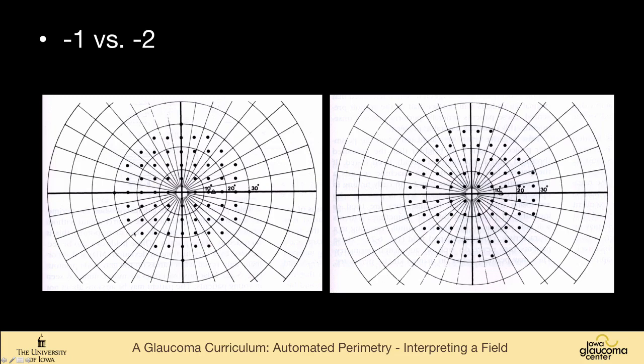So 24-2 means that we're using a dash-2 strategy. So this is the dash-1, and this is the original, on the original Octopus unit, where there are test points along the horizontal, test points along the vertical, and then every 6 degrees going out. The problem with that is that if you had a neurologic defect or a glaucomatous defect, these points may or may not be affected because it's right on the area of interest. And so the dash-2 strategy moves the points 3 degrees above and below, left and right, of the meridia. And so we're not testing right along the horizontal, we're testing right above it or right below it.